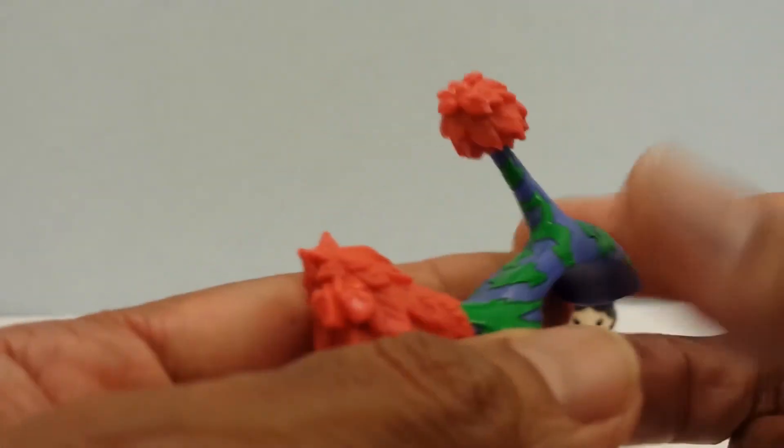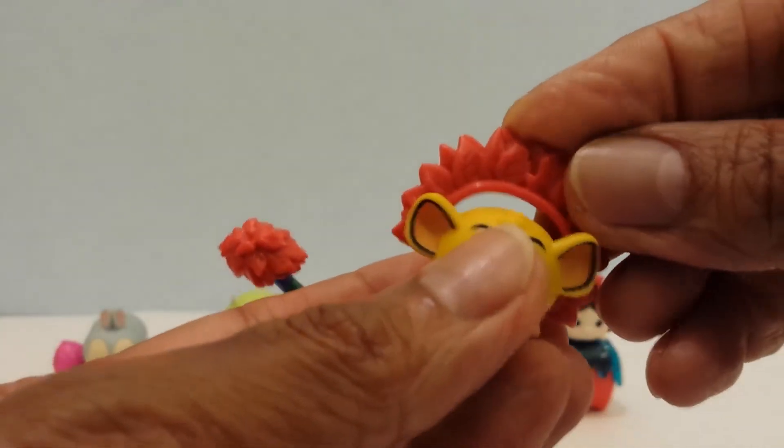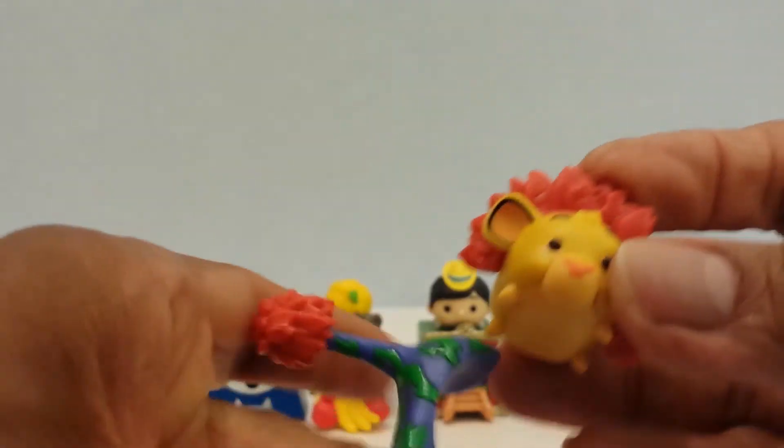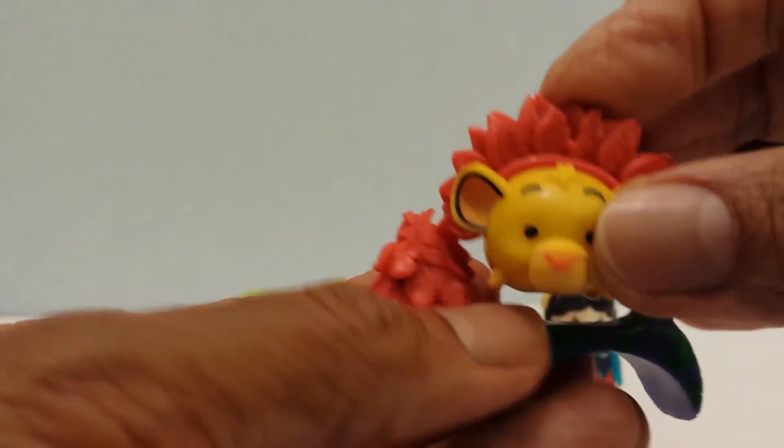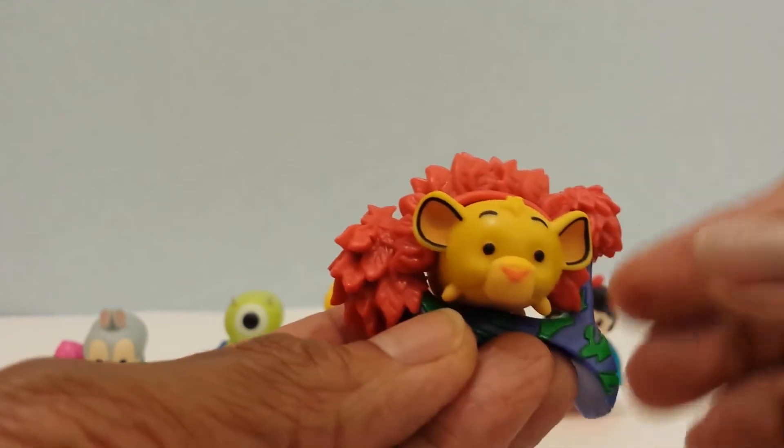And then this other piece, I think I am going to have to put it together off camera. Here is Simba's accessory piece, and then Simba has another little piece that goes on top of him like this. And then it looks like it fits in here like this, super cool guys.